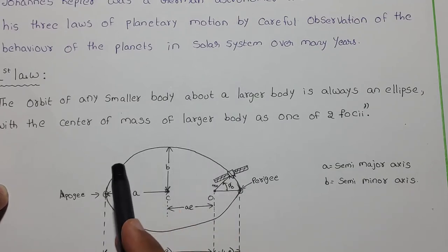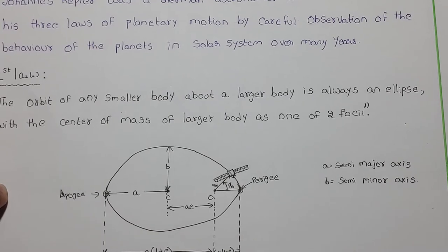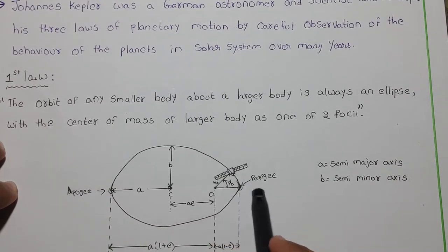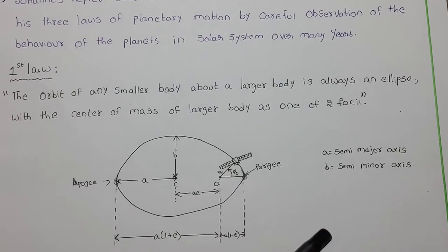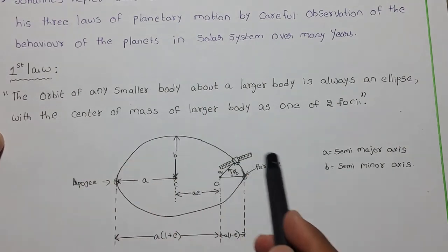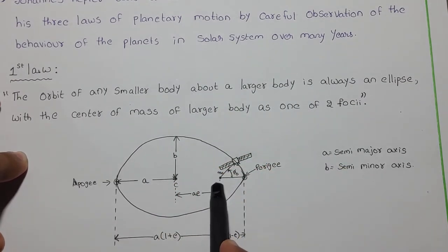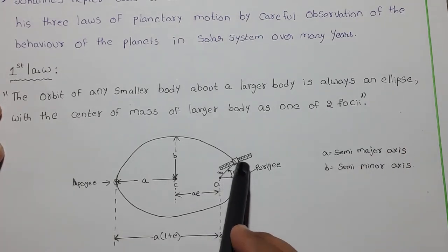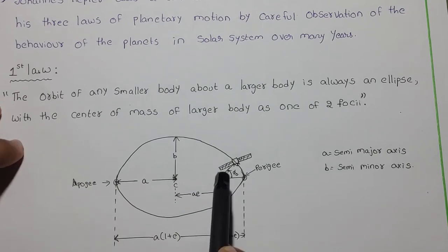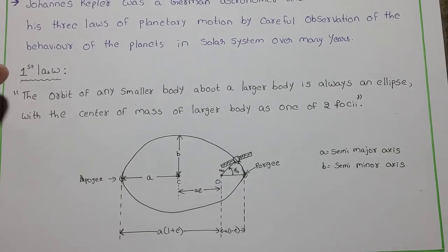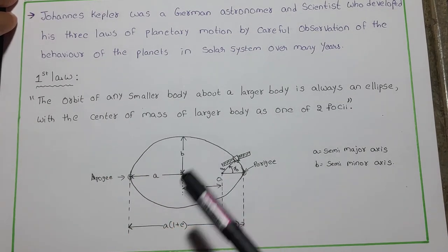We know that in an ellipse we have semi-major axis and semi-minor axis which are represented as a and b. Now when a satellite moves in its orbit, it makes an angle which is known as phi theta. Kepler stated that the orbit of any smaller body, that is a satellite, about a larger body, that might be Earth, is always an ellipse with the center of mass of the larger body on one of the focus points. In this way we can illustrate the first law of Kepler.